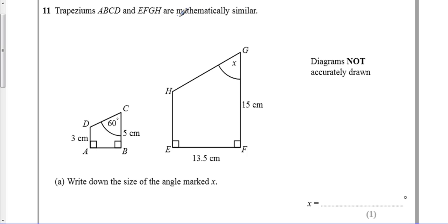Okay, question number 11. We're told something about the shapes that are mathematically similar, which means all the sides are in the same enlargement, or they grow or shrink at the same rate, but the angles are still the same.